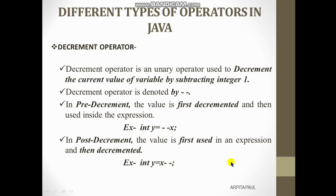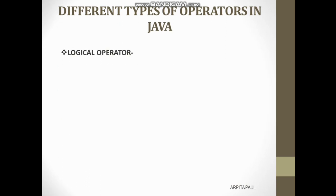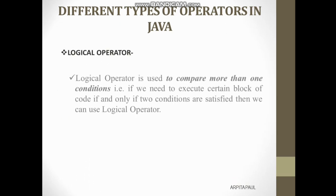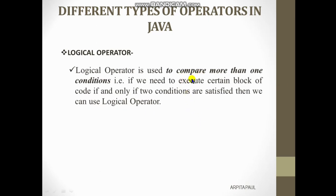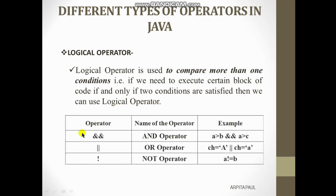Now coming to the next operator — the logical operator. The purpose of logical operators is to compare more than one condition. If we need to execute a certain block of code only if two conditions are satisfied, we use logical operators. You can see the symbols, names, and examples in the table.